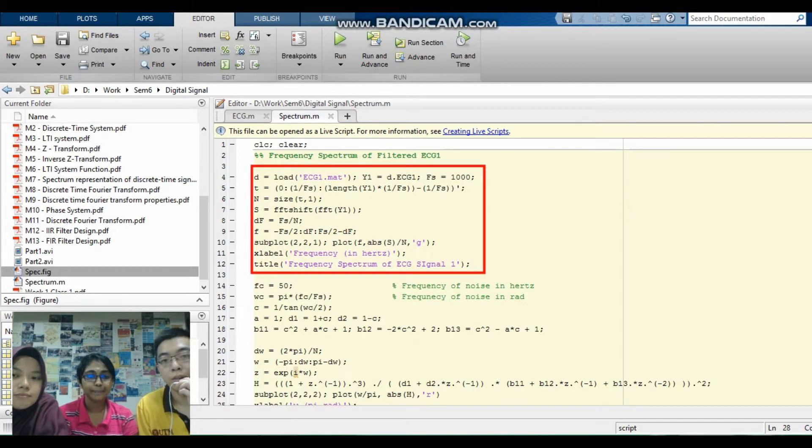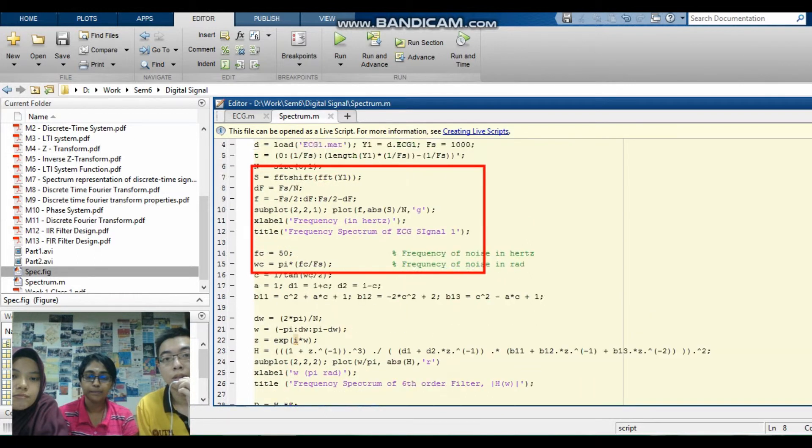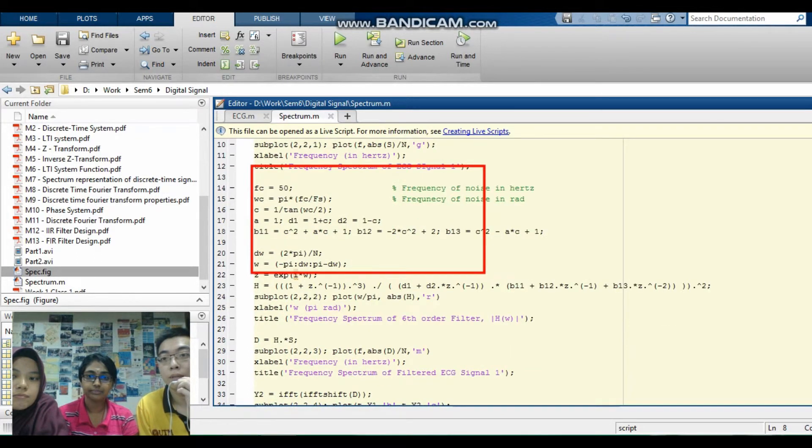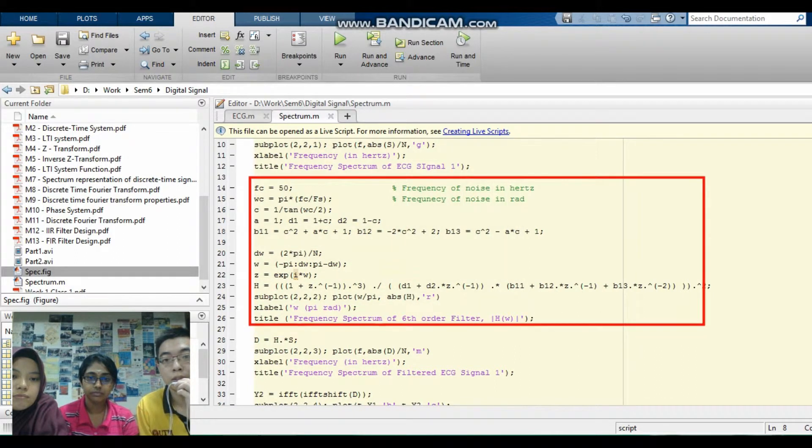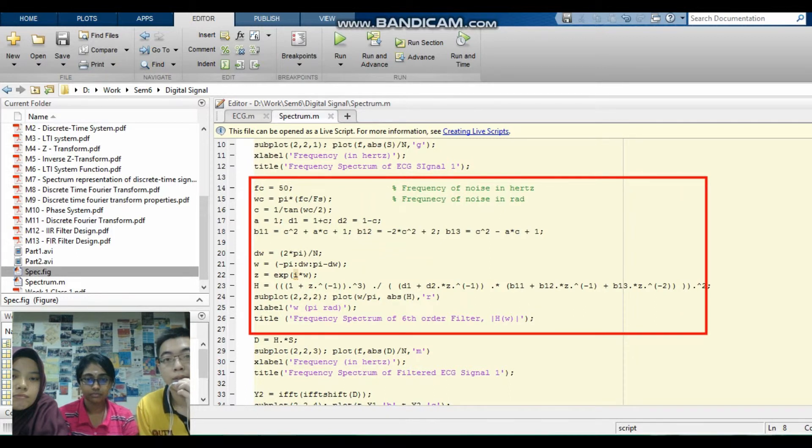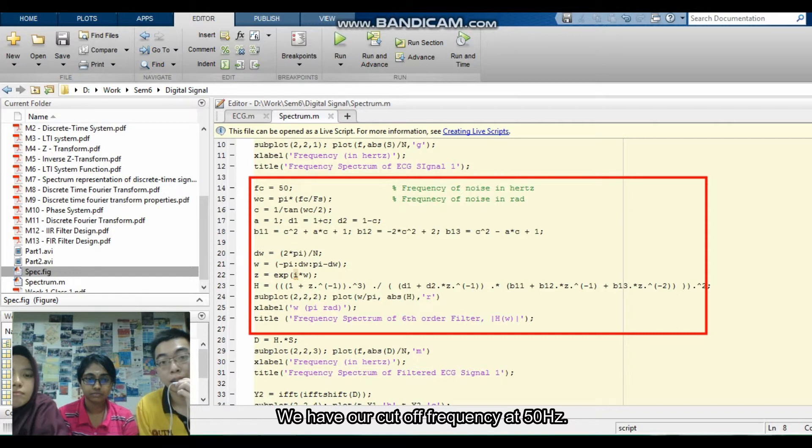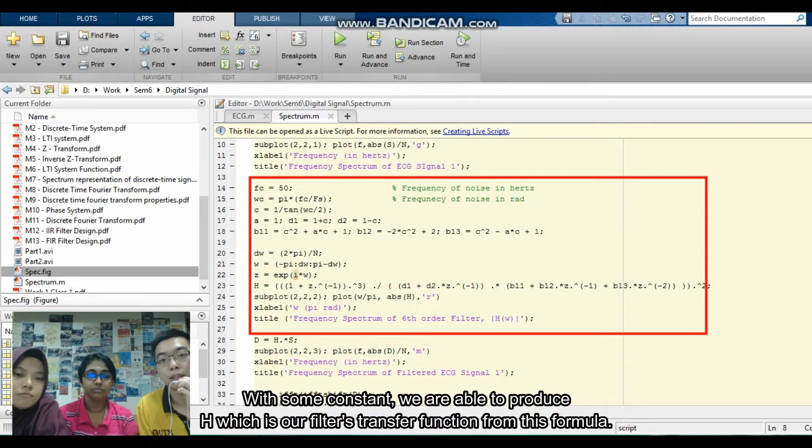For our lower part, you can clearly see that we have our frequency, the cutoff frequency at 50 Hz. And with along some changing and some constant, we are able to produce our H, which is our filter transfer function from this formula.